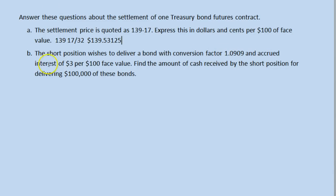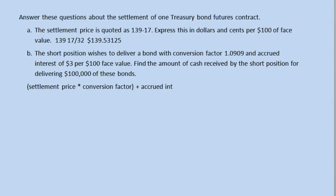There's another small adjustment we have to make, which has to do with accrued interest — the fact that when you buy a bond, you do have to pay the seller the amount of interest that has accrued up to the point you are buying it. So we need to find the amount of cash that's going to be received by the short position when they deliver $100,000 of these bonds. There is an equation we use: we take the settlement price and multiply by the conversion factor, then add in the accrued interest, and then adjust it for the total amount being delivered.